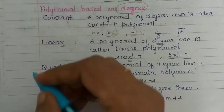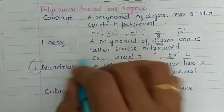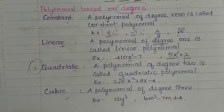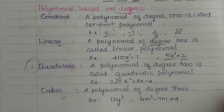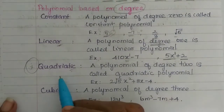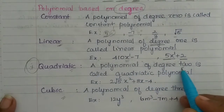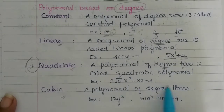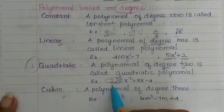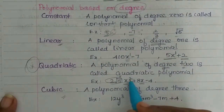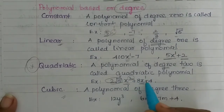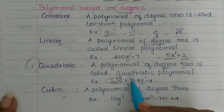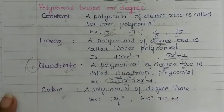Next is quadratic. A polynomial of degree 2 is called a quadratic polynomial. The highest power is 2. For example, 2√5 x squared plus a variable with power 2 and 1 — the highest power is 2, so the degree is 2. It is a quadratic polynomial.